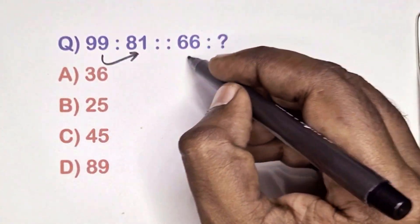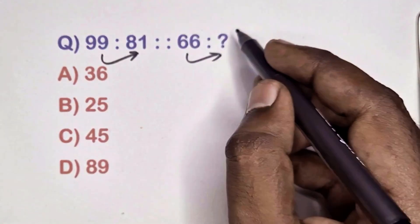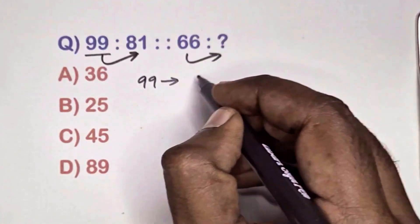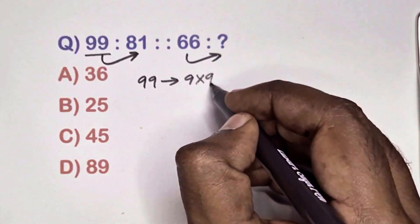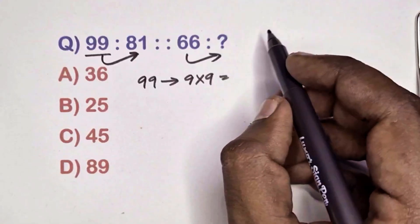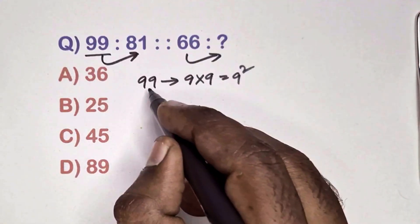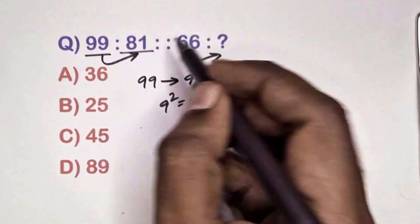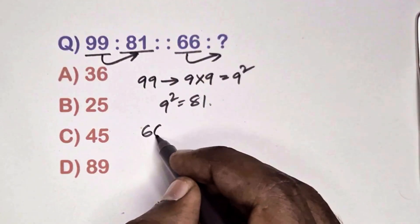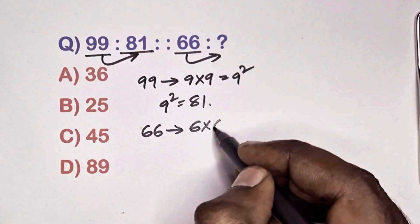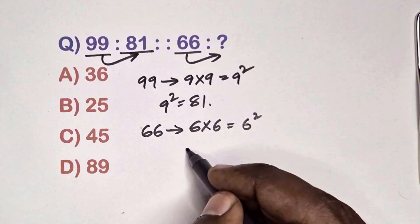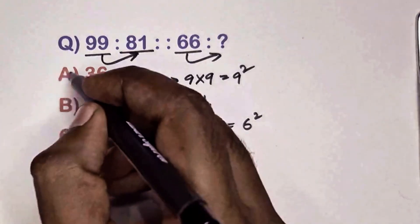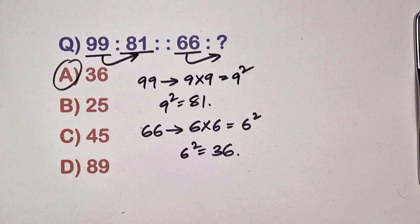Find the relation between this pair of numbers. Take 99 — write as individual digits and square them: 9 squared is 81. Take 66 — multiply individual digits: 6 squared is 36. So option A is the correct answer.